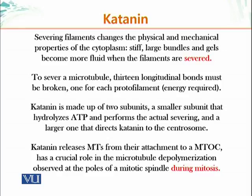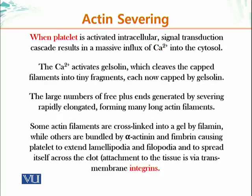Katanin has a critical role in microtubule depolymerization observed at the poles of the microtubule spindle during mitosis. It is also found in proliferating cells in interphase, and in post-mitotic cells such as neurons. Neurons extend long processes — axons and dendrites — and the microtubules needed to stabilize these structures cannot do so if they remain attached to the centrosome. They must be severed so they can be transported into the axon to stabilize that cellular process.